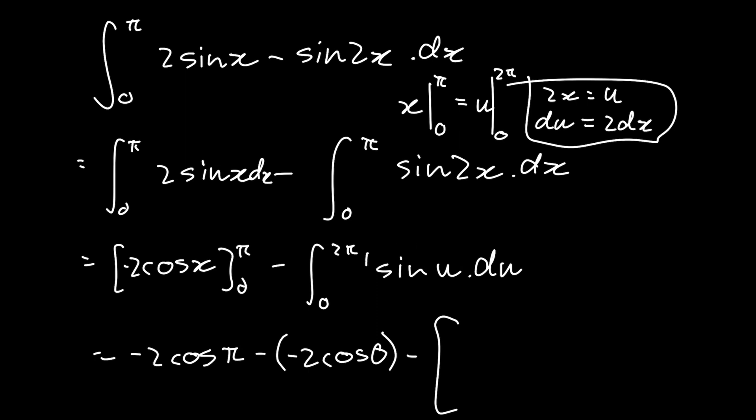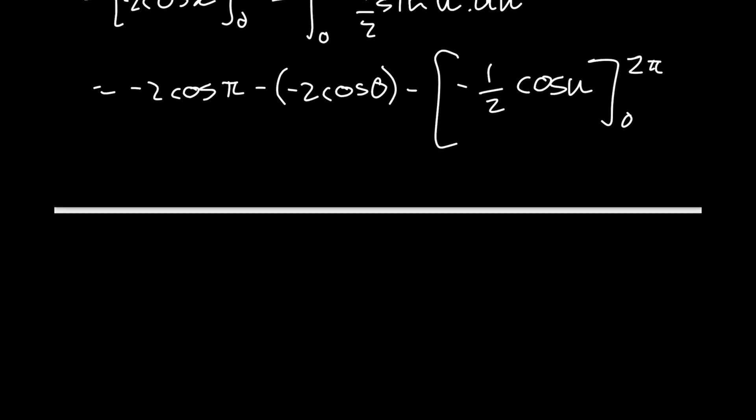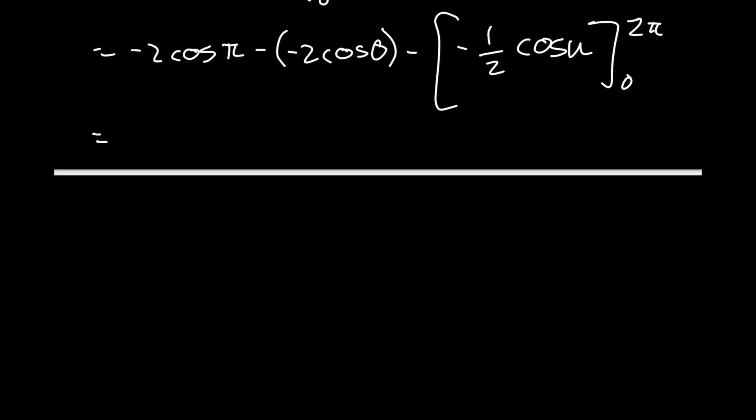This should be 1/2 here, because when we substituted for dx, we substituted du/2, since we took the 2 across. So we get -1/2 cos(u) from 0 to 2π.